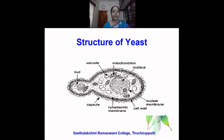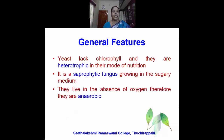In this image, we also find the budding of the yeast, which is an asexual method of reproduction. Yeast does not contain chlorophyll and they are heterotrophic in the mode of nutrition, wherein they have to receive nutrients from other substrates, from their host. It is a saprophytic fungus growing in a sugary medium. They live on dead organic matter, live in the absence of oxygen, and therefore are anaerobic in nature. They do not require oxygen for their respiration and they are anaerobes.